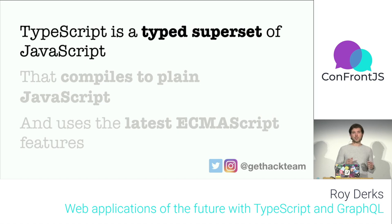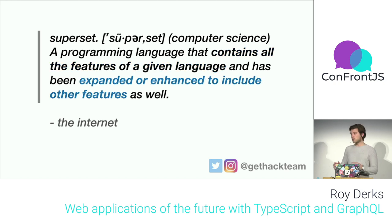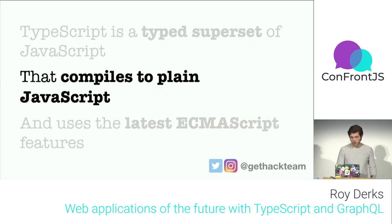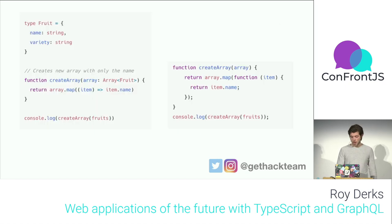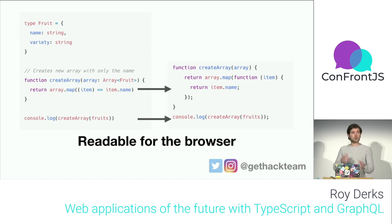TypeScript is called a typed superset of JavaScript. If you ask the internet, it will say it contains all the features of a given language and has expanded or enhanced those features. So you get extra features in TypeScript, or maybe some syntactic sugar. It also compiles to plain JavaScript, because your browser can't read TypeScript — it needs a readable format. On the left you can see TypeScript with types defined for the function, its return, and its input. On the right is the compiled output that's readable by the browser.